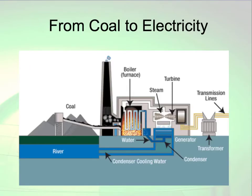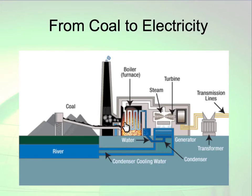Here is a diagram showing how we get electricity from coal. The coal goes into the plant, where it is burned. Inside there is water, and once it burns, it turns that water to steam. The steam turns a turbine, and the turbine generates electricity. This is a very similar process to how we generate energy in many other ways.